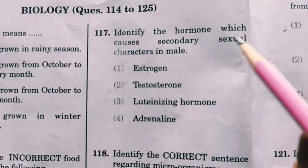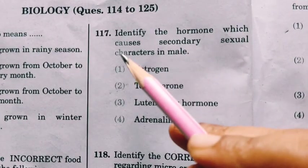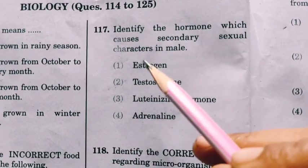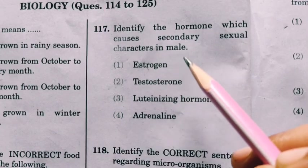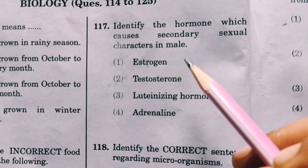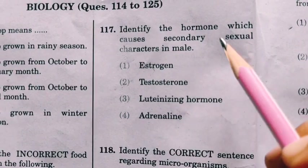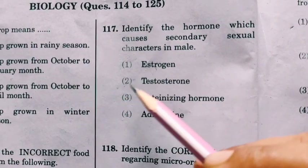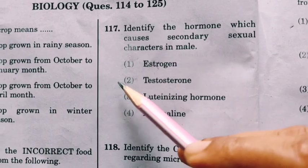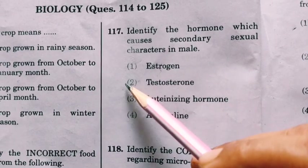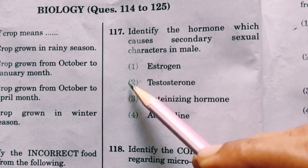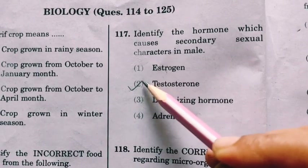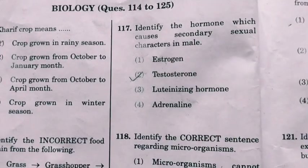Identify the hormone which causes secondary sexual characters in males. In males, the hormone which causes secondary sexual characters is testosterone.